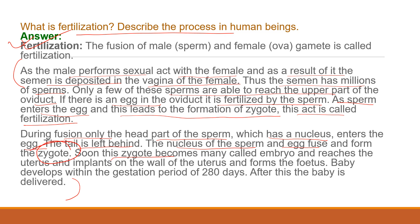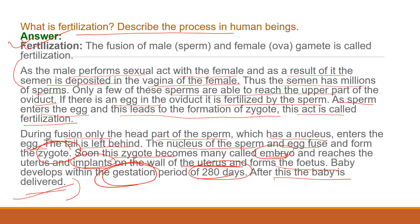This zygote is called an embryo, which reaches and implants on the wall of the uterus — this is called implantation. It then forms the fetus, and the baby is delivered after 280 days, which is the gestation period.